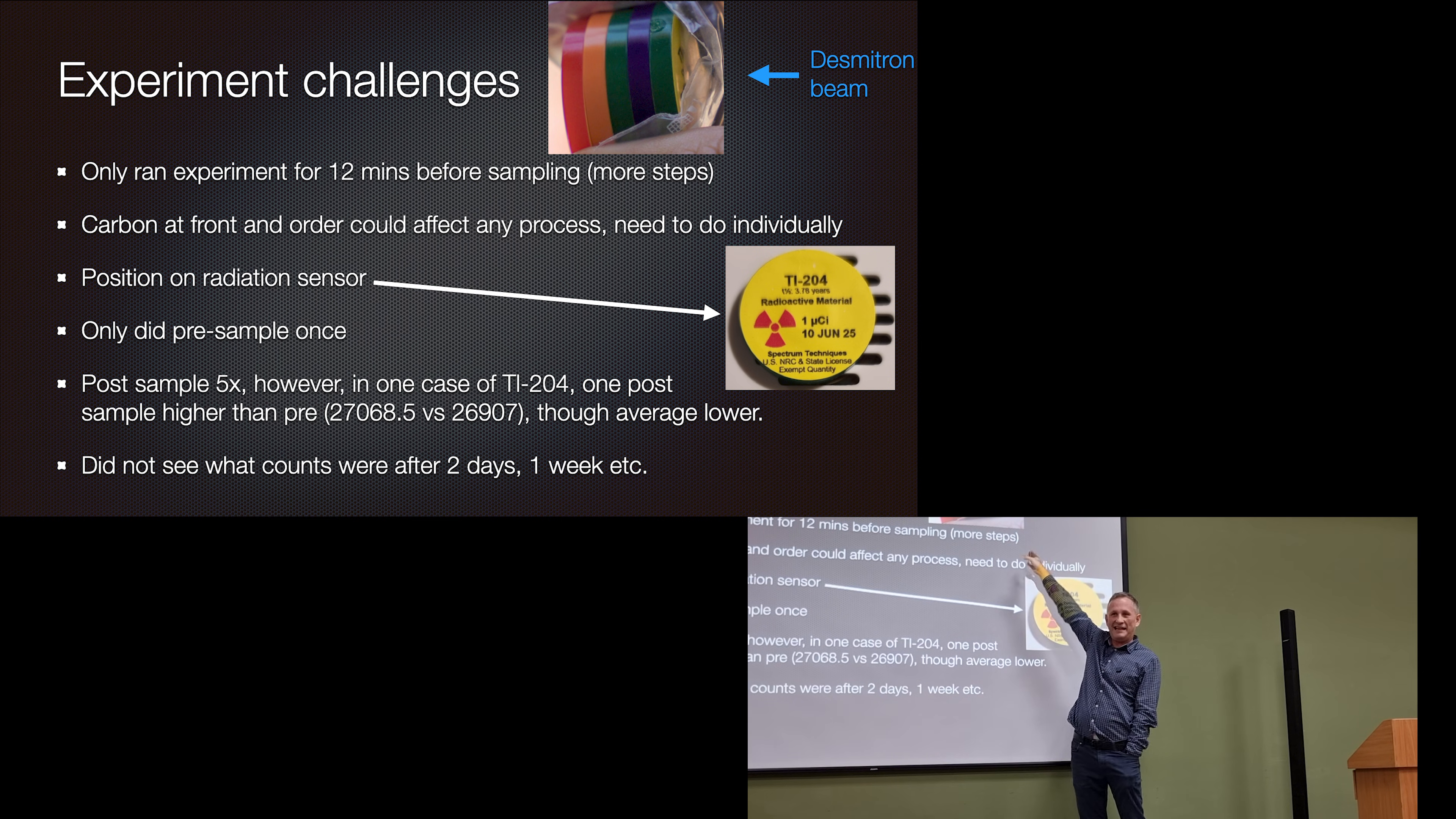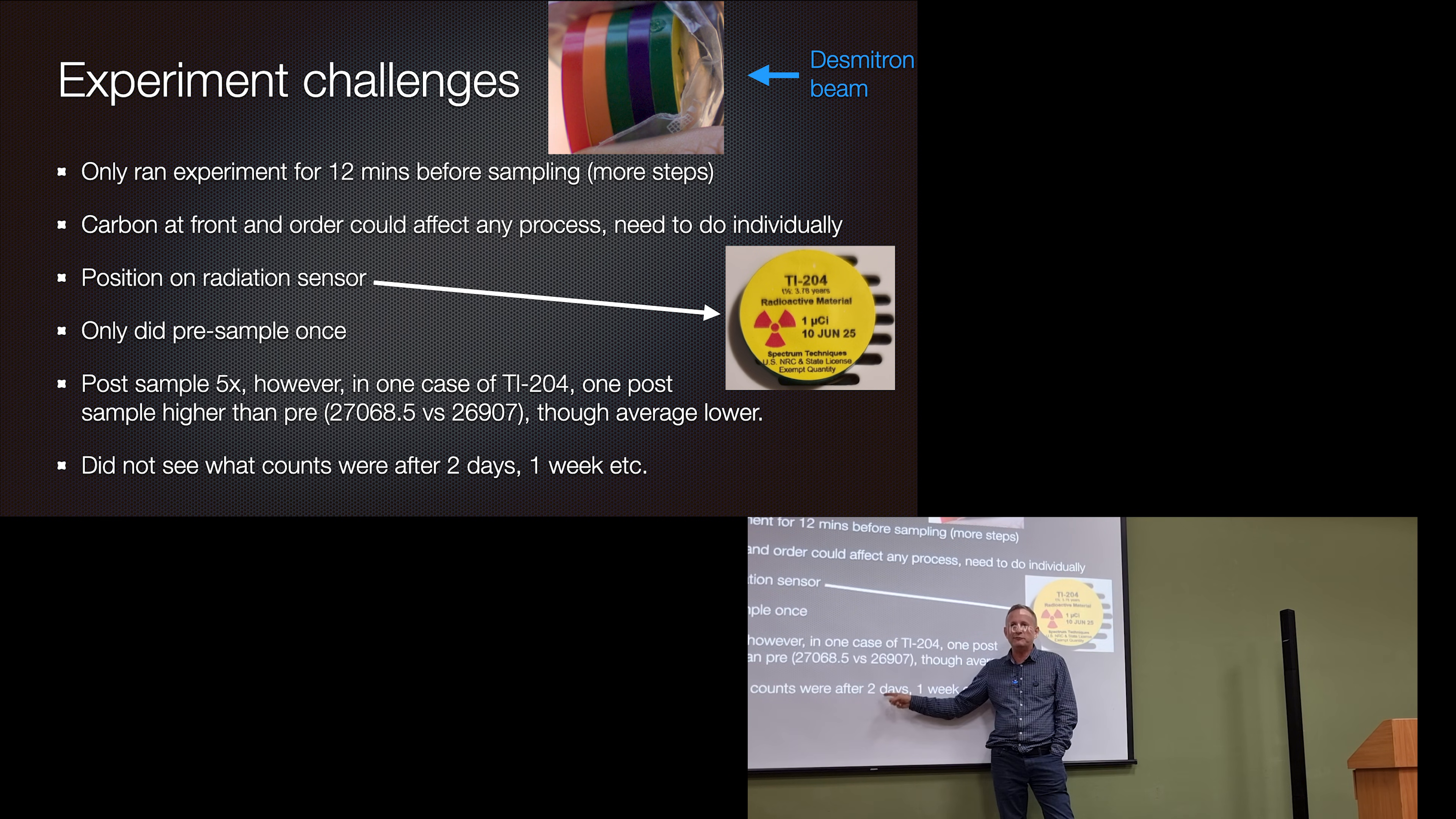Okay. So the experiment challenge is, we only ran for approximately 12 minutes before sampling. The carbon at the front end could affect any processes. Because carbon is a moderator. And these structures get moderated by carbon. Okay. So that's, I actually have the carbon there which I need to send off to the beamline. And to see how fast. That's natural carbon from charcoal. So I need to find out how many pathways that's gone through. Position on the radiation sensor. I only did pre-sampling once. Post-sampling. There's a couple of caveats here that I would like to do. And also, I did not see what the radiation was like after two days. Maybe it drops for two days. Because there's a structure that is preventing the emissions. And then after two days, it returns back to where it was. So I don't know. And this needs to be done. And I would like to have done it after one week.